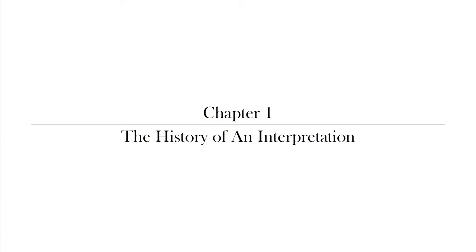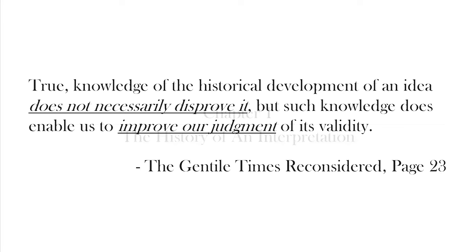Chapter one of Johnson's book is titled The History of an Interpretation. To begin this chapter, Johnson points out that there's a kind of relative value of thinking about where ideas come from. He says: true, knowledge of the historical development of an idea does not necessarily disprove it, but such knowledge does enable us to improve our judgment of its validity.